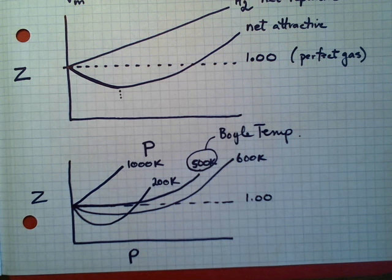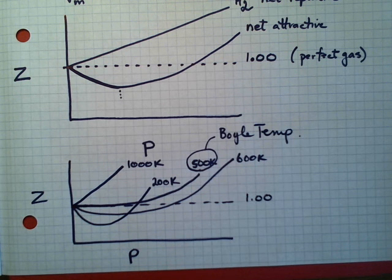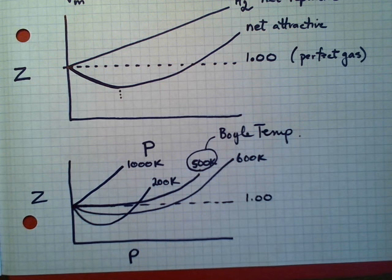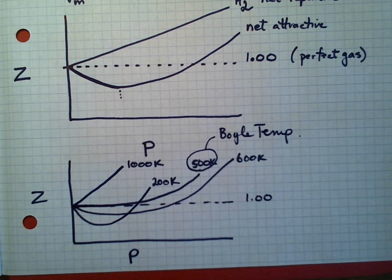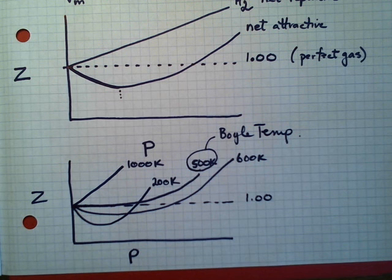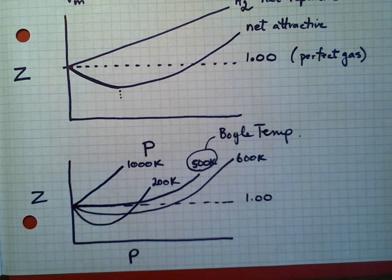So under conditions of low pressure and low temperature, it makes sense that attractive forces will dominate. And under conditions of high temperature, those attractive forces are overcome. And under conditions of high pressure, we've got finite size effects are a factor, and so we have net repulsive as well.